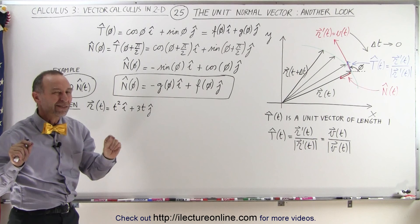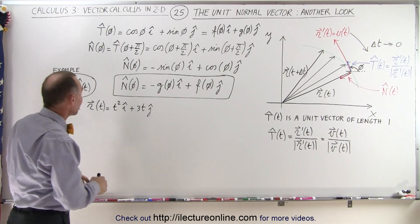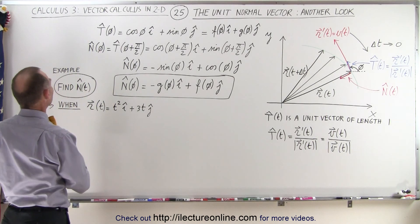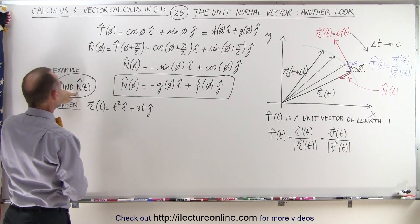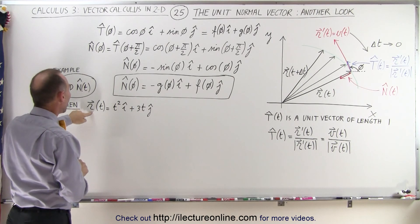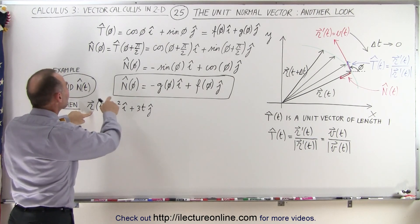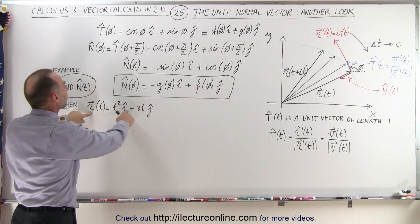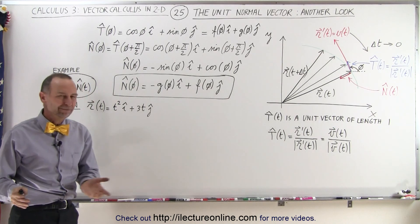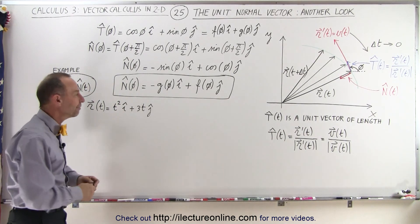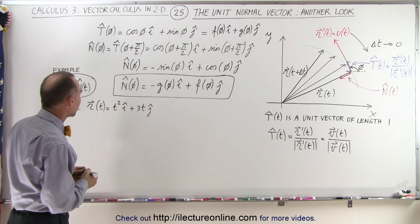Now that we have that relationship established, let's use an example. We're going to find the unit normal vector when the position vector is defined as t-squared in the i-direction plus 3t in the j-direction. We've seen that one before, but it's a good example — let's go ahead and use it.